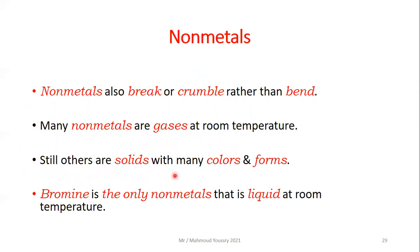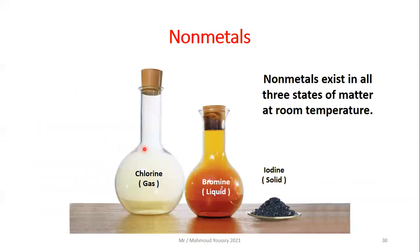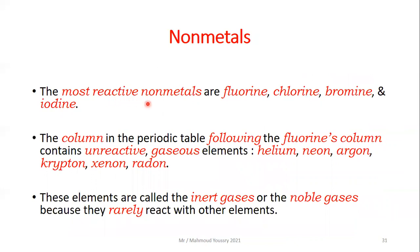Some non-metals are solids with many colors and forms. Bromine is the only non-metal that is liquid at room temperature. Chlorine is a non-metal gas, bromine is a non-metal liquid, and iodine is a non-metal solid — so non-metals exist in all three states of matter at room temperature. The most reactive non-metals are fluorine, chlorine, bromine, and iodine, found in column 17 of the periodic table.